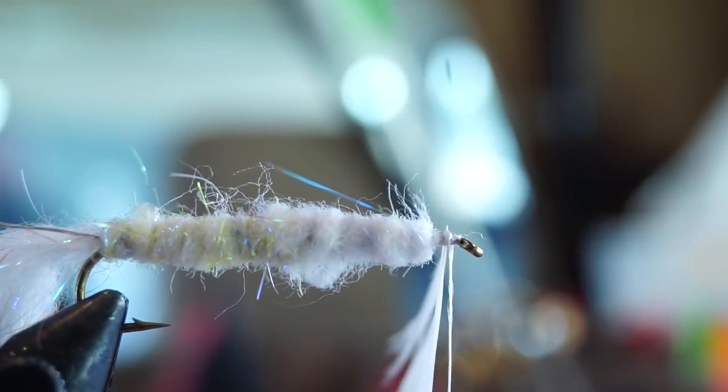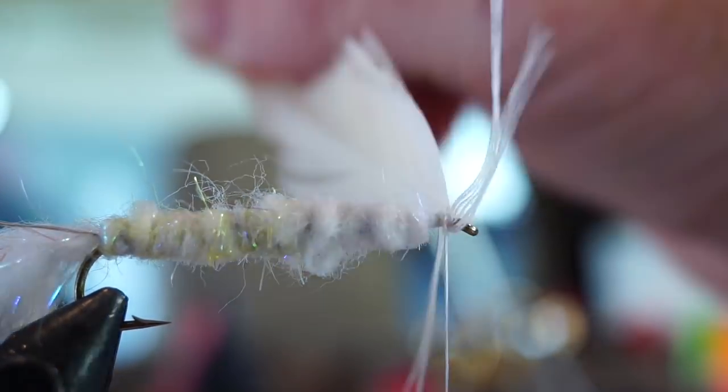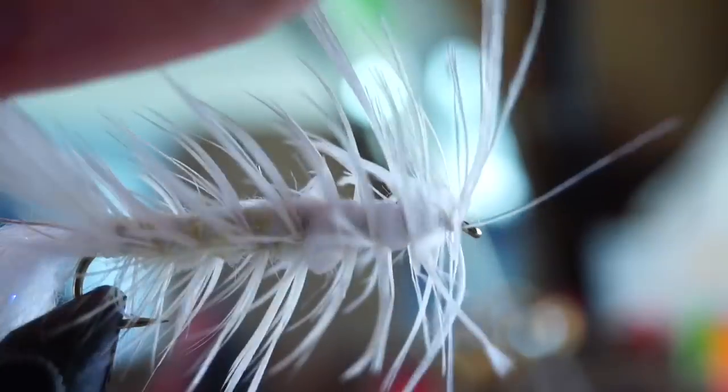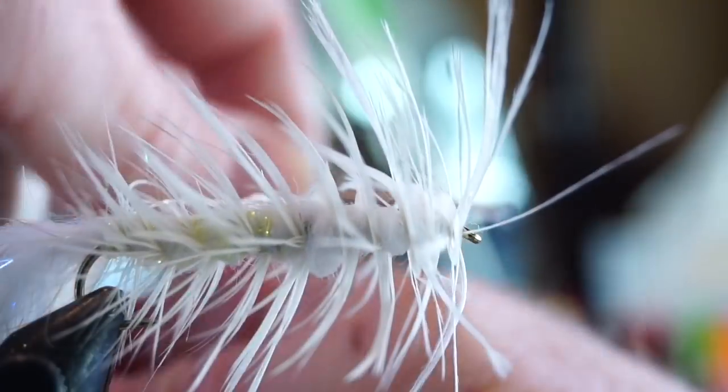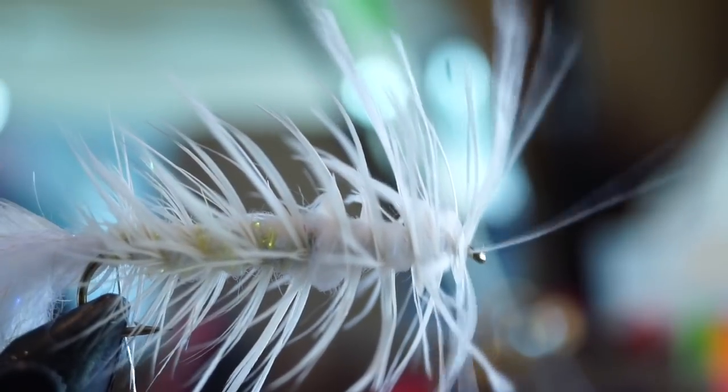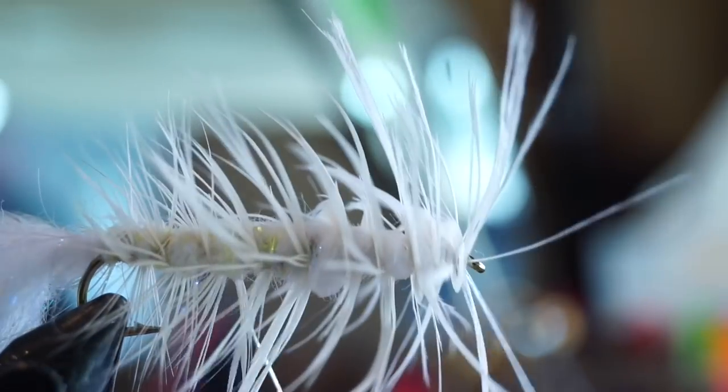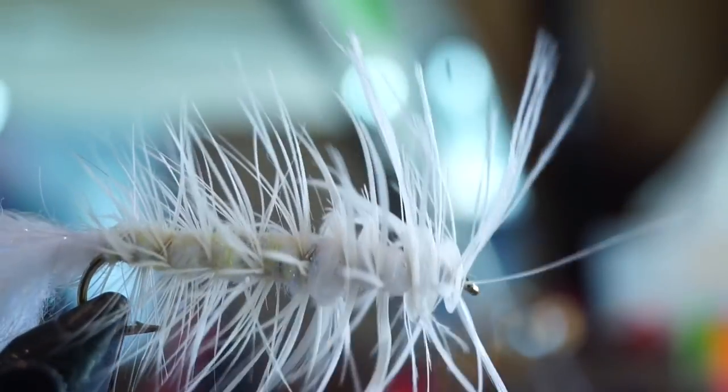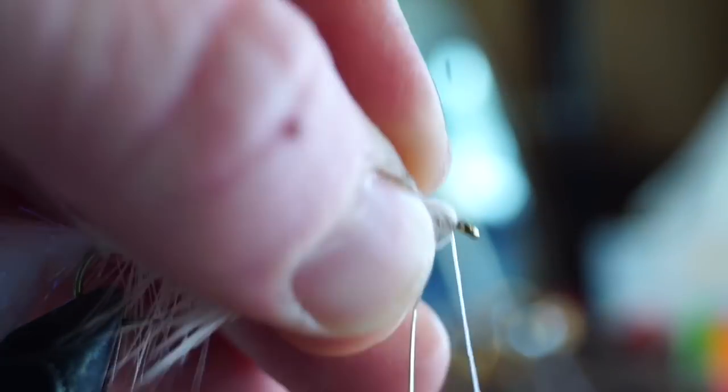Now start palmering the feather down the hook shank, making two tight wraps in front near the hook eye first. Once you reach the rear of the hook shank, grab your wire and start making wraps up the hook shank over the feather, going the opposite direction. It also helps to wiggle the wire while wrapping, to help ensure that it doesn't trap the feather fibers.